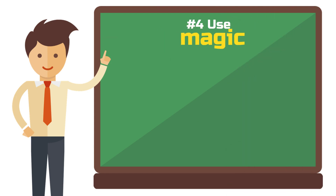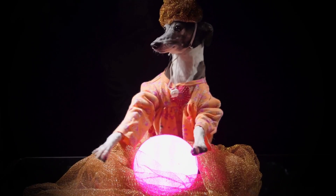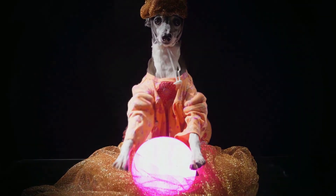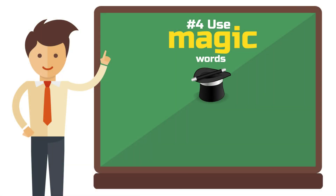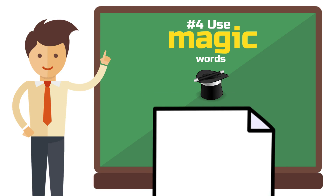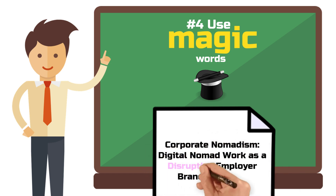Tip 4: Use magic words. Magic words are the missing icing on the cake when it comes to your title. They aren't meant to make you drift into fiction or make your title seem ridiculous. Rather, you can use them to make your title more interesting and striking. I came to the following conclusion for my example: 'Corporate Nomadism: Digital Nomad Work as a Disruptive Employer Branding Signal.' My magic word polarizes, makes a statement, sounds good, and rounds out the title in a worthy way. I replaced 'tool' with 'signal' as this hints to an interesting theoretical angle about signaling theory that I'm trying to pursue in the paper.